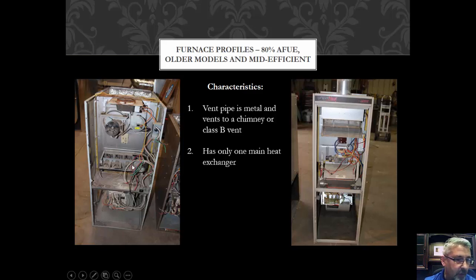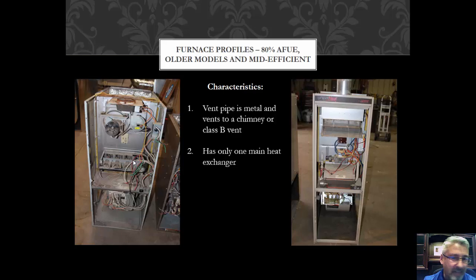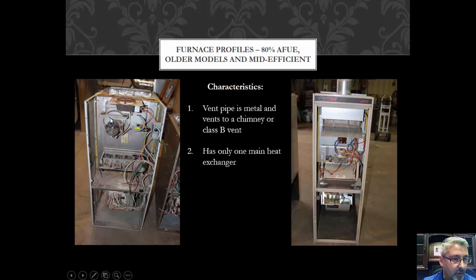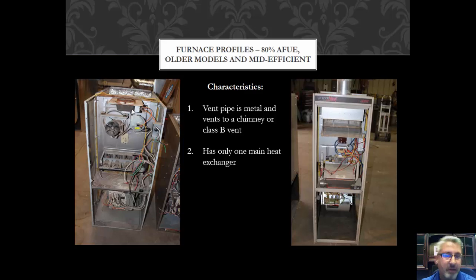If you look at this furnace, you've got four in-shot burners, meaning four cells, but still one primary — no secondary. This Lennox has a draft door actuator that closes on an off cycle so you don't have a constant draft up the chimney. This one is atmospherically vented — it just goes up to the B vent or chimney. The other one has a vent motor that pushes the flue gas into a chimney or B vent. 80% furnaces are not designed to vent outside on the exterior without modifications.